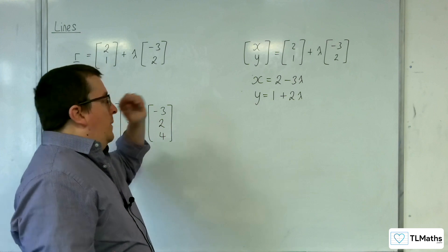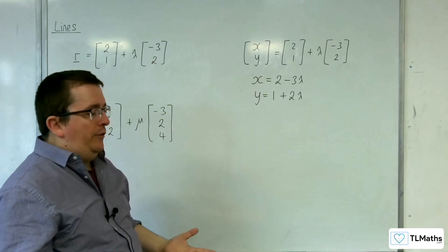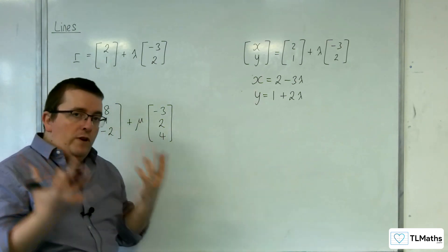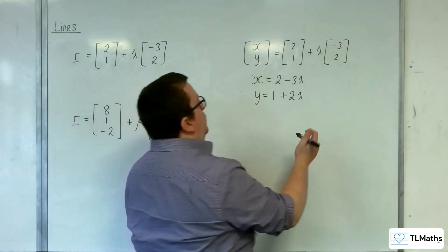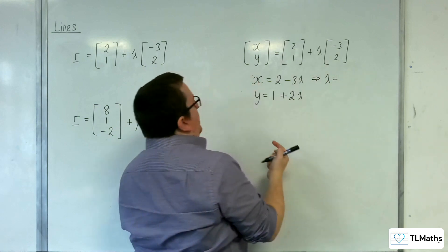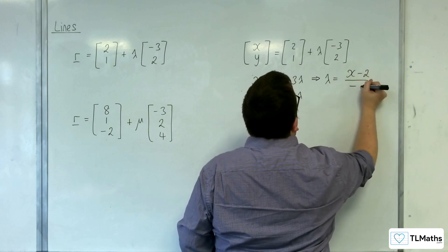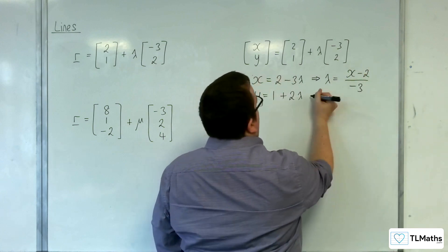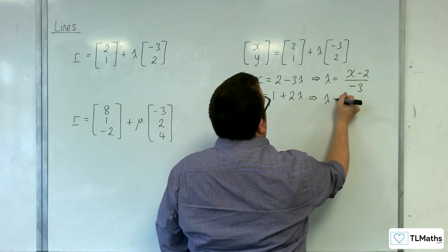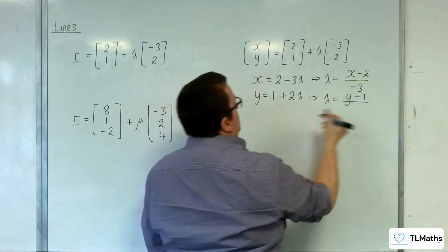So, if I then want to go from these parametric equations to a Cartesian equation, I can rearrange them both to get lambda equals. So, for this one, I could subtract 2 from both sides and divide both sides by minus 3. And for this one, lambda would be equal to subtract 1 from both sides and divide through by 2.